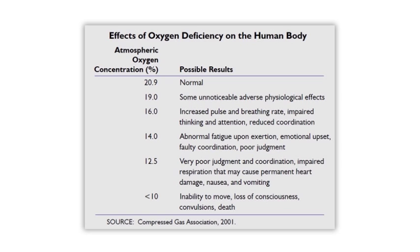At 14% oxygen, we'll see abnormal fatigue upon exertion, emotional upset, faulty coordination, and poor judgment. At 12.5% oxygen, there will be very poor judgment and coordination, impaired respiration that may cause permanent heart damage, as well as nausea and vomiting.